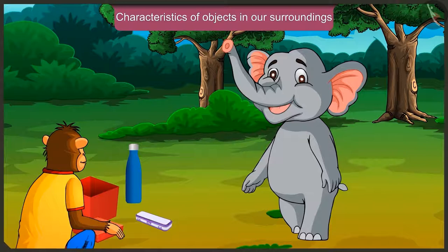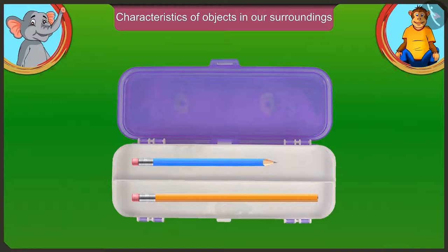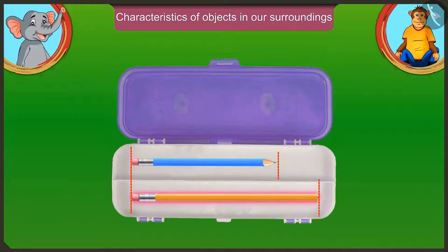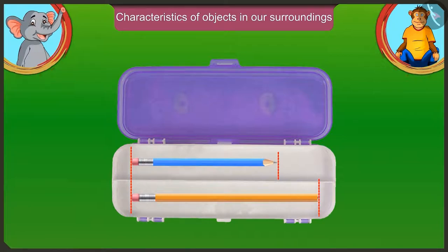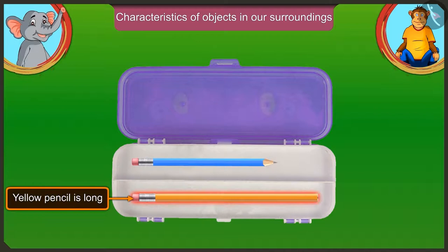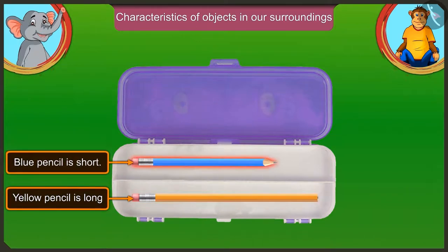What is there in this pencil box? There are two pencils in the pencil box. Look, Jaggu, in this pencil box, the yellow pencil is longer than the blue pencil. Yes. This means that the blue pencil is small. The yellow pencil is long and the blue pencil is short.